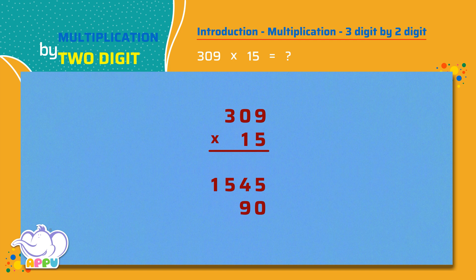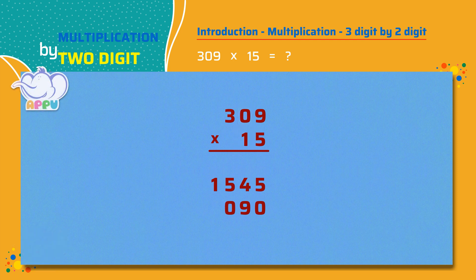Next, we multiply the number in the tens place by one, which is zero times one equals zero. We write this in hundreds place. Next, we multiply the number in the hundreds place by one, which is three times one equals three. We write this in thousands place.